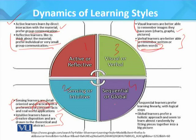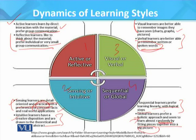The fourth dimension is sequential versus global learners. Sequential learners prefer learning linearly with logical, stepwise progression. Global learners prefer a holistic approach, taking a broader and more general view, and seem to learn almost randomly by fitting pieces together into a big picture. Sequential learning is more logical and stepwise, while global learning is more holistic and less structured.